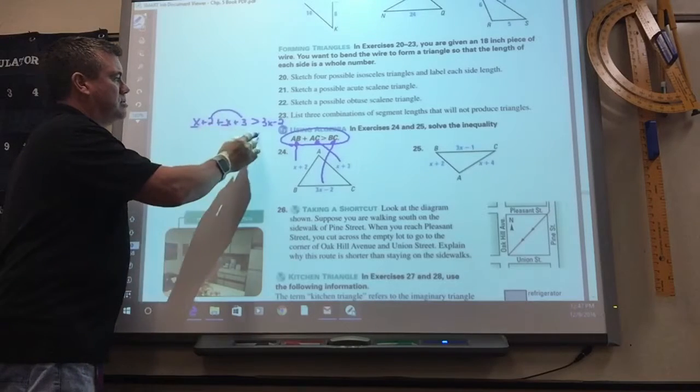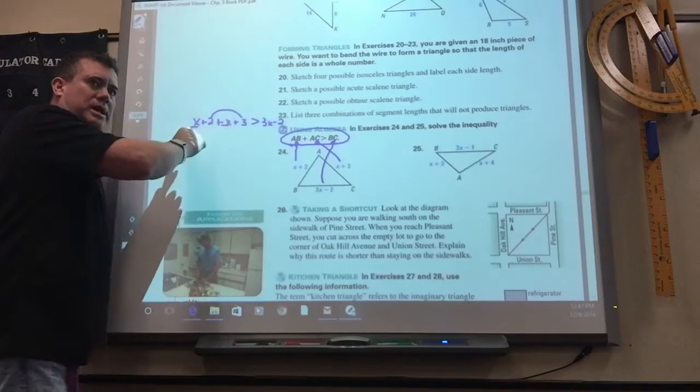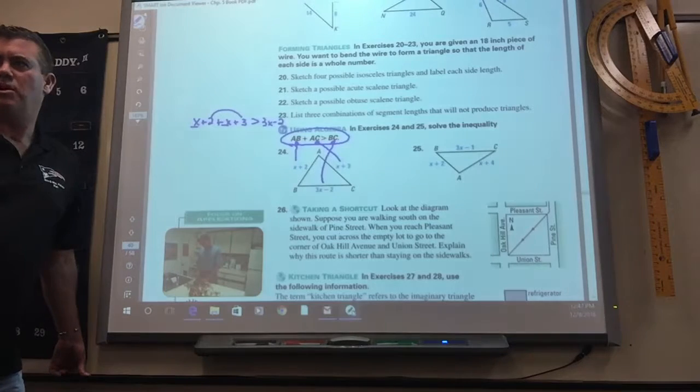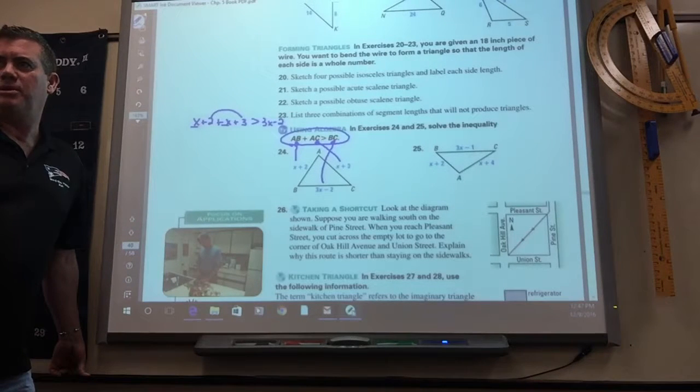So combine the like terms, then get the x by itself. Solve it like an equation. You guys know what I mean? Yeah.